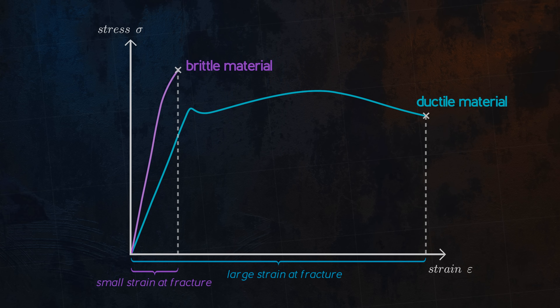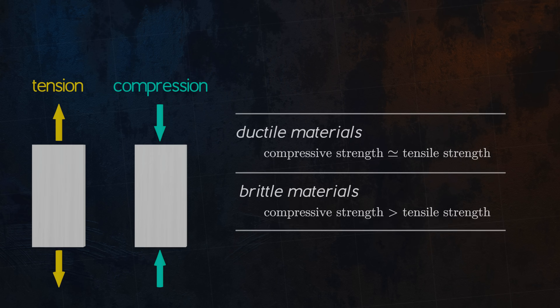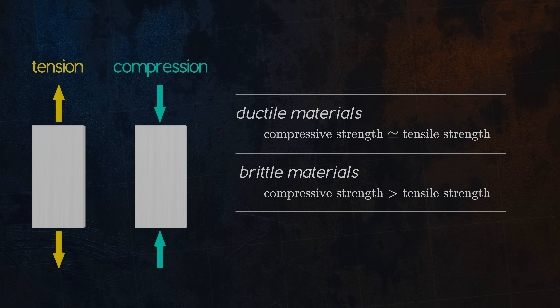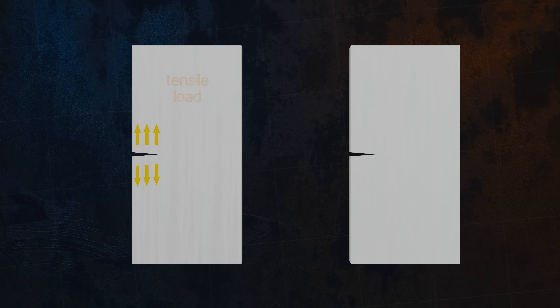Now that we have covered what ductile and brittle materials are, let's return to the question of why brittle materials are much stronger in compression than in tension. There are two factors at play. The first factor is that tensile loads tend to encourage the formation and propagation of cracks, whereas compressive loads do not, as illustrated here.